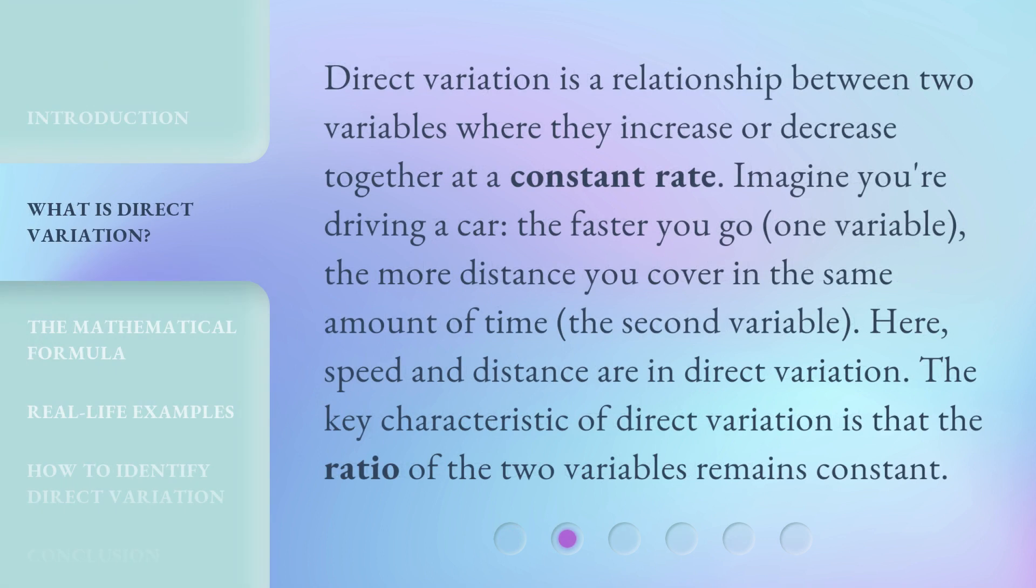Direct variation is a relationship between two variables where they increase or decrease together at a constant rate. Imagine you're driving a car. The faster you go (one variable), the more distance you cover in the same amount of time (the second variable). Here, speed and distance are in direct variation. The key characteristic of direct variation is that the ratio of the two variables remains constant.